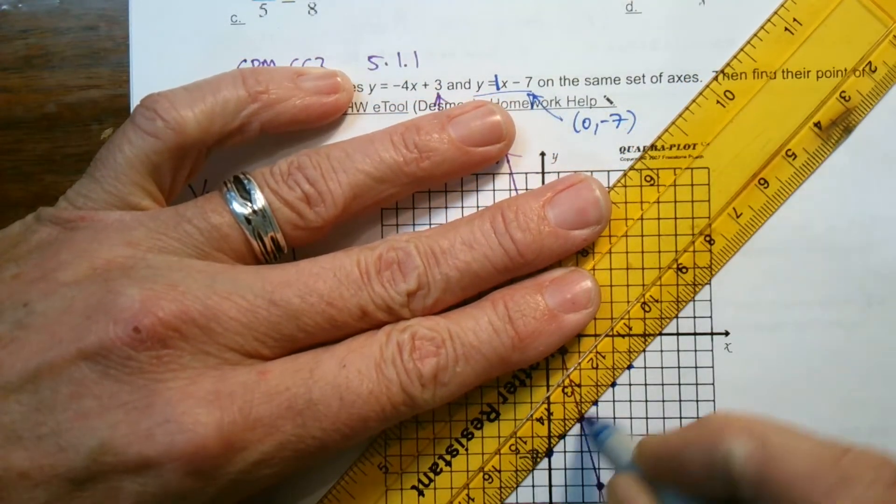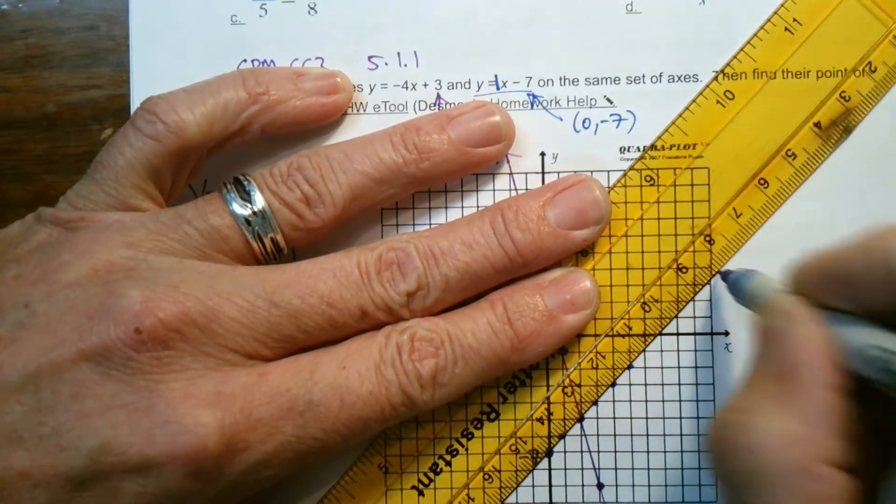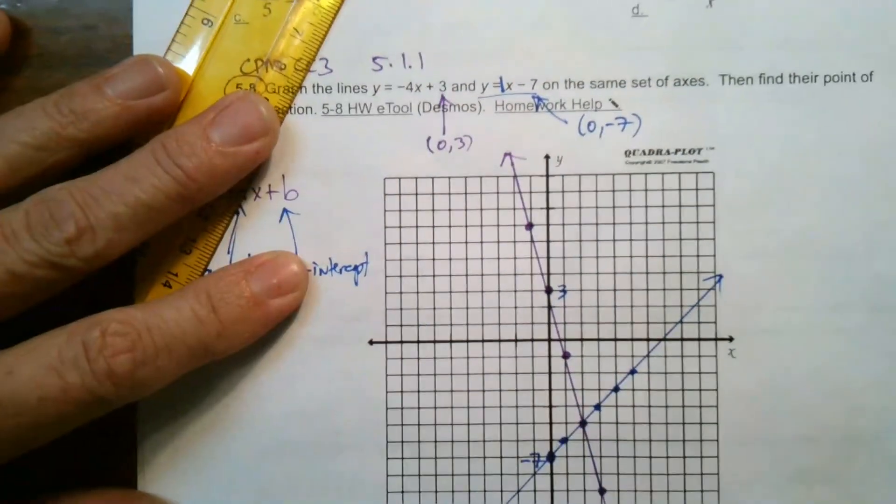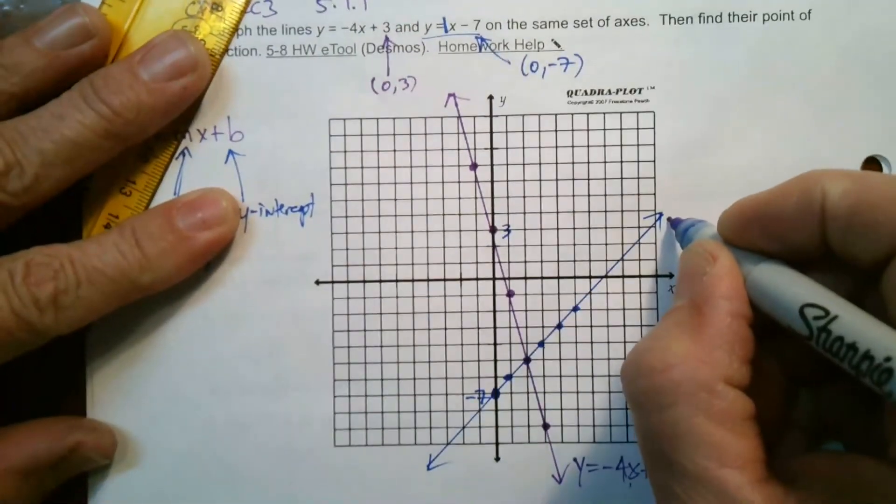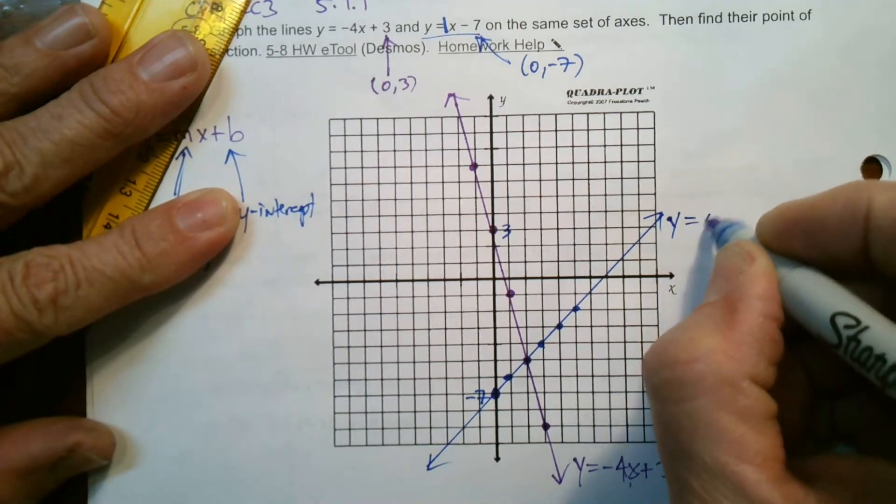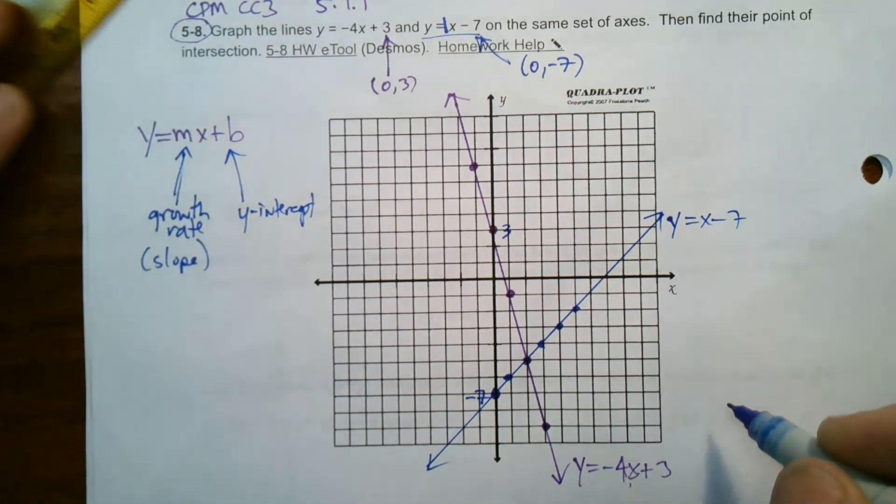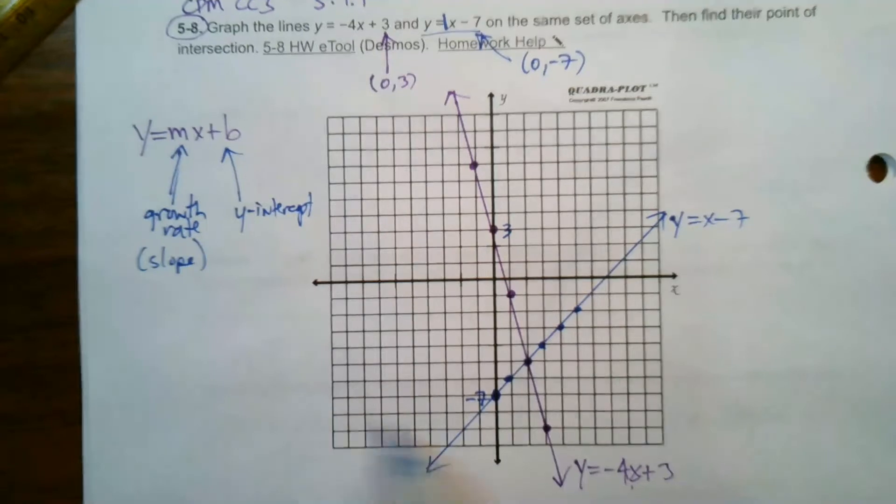So, I can see that enough points there. So, I'm going to connect my dots to, once again, show, when you connect the dots, why are we doing that? Because it's showing all the possible solutions to the equation y is equal to x minus 7.